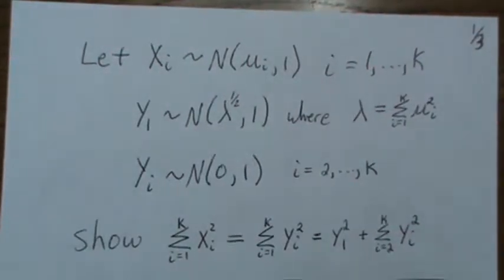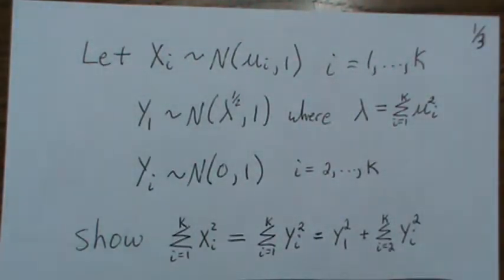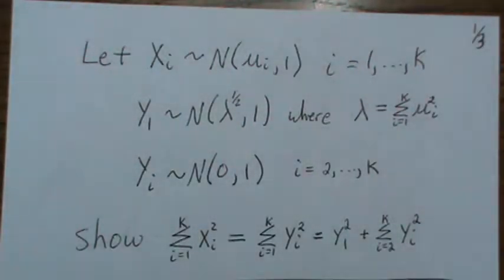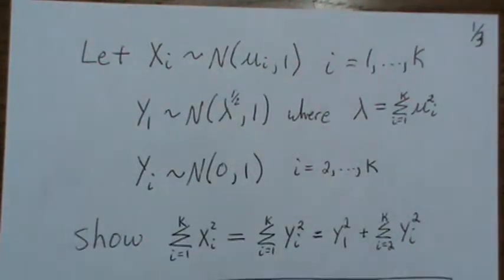The result in this video is going to help us in solving or showing the non-central chi-square distribution — the general non-central chi-square. In an earlier video I showed how to calculate a non-central chi-square distribution with one degree of freedom and non-centrality parameter lambda. But this result is going to help us show the general result.